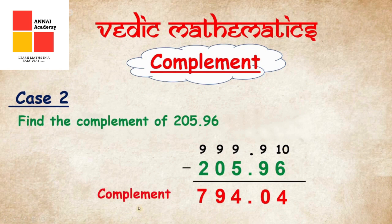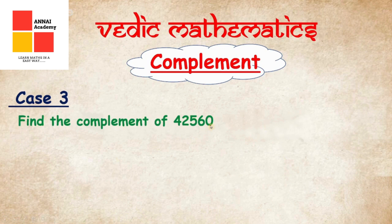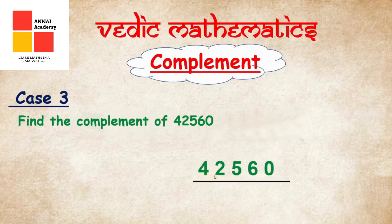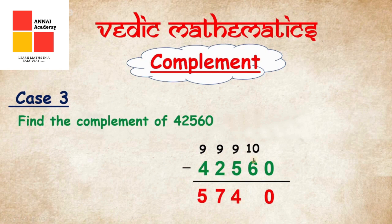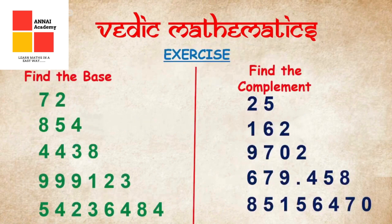Now let's see a number which has a zero at the end: 42,560. When finding its complement, we note the trailing zero as it is. The last non-zero digit becomes 6. Starting from the left: minus 4 from 9 gives 5, minus 2 from 9 gives 7, minus 5 from 9 gives 4, and minus 6 from 10 gives 4, then bring down the zero. The complement of 42,560 is 57,440. Practice and get perfection — stay connected with iEye Academy.